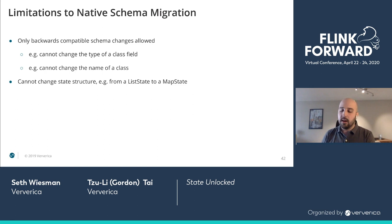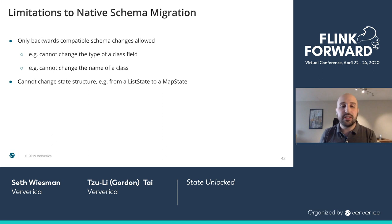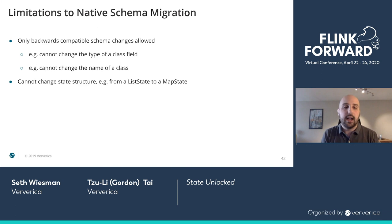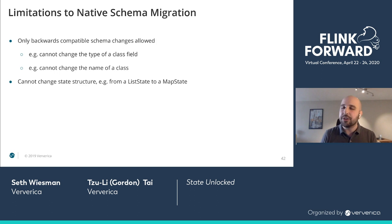There are some limitations, just like when running an ALTER TABLE statement on a database. Currently, we cannot change the type of a class field and we cannot change the name of a class. If you attempt this, it will fail the migration and fail your job early, telling you this migration is not supported. For example, we cannot go from list state to map state. I could change the POJO within a list state — going from an Employee with just a name to a name and a title — but not from list state to map state, because how would we determine the key and value mapping?